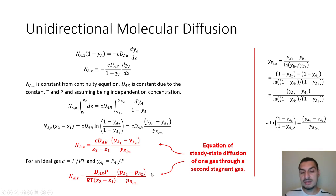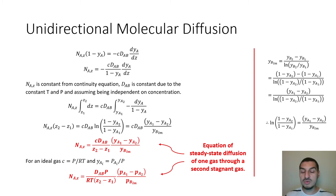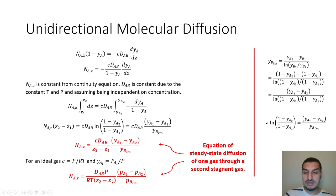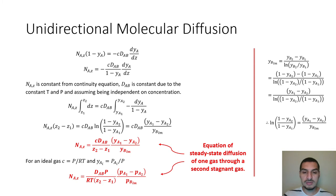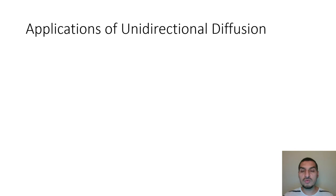These two equations are called the equations of steady state diffusion of one gas through a second stagnant gas. The flux expression uses the boundary conditions at z₁ and z₂ to give a constant value. All terms — D, P, RT, z₂−z₁, P₁, P₂, P_B,lm — are constants, so we can calculate the flux with knowledge of these parameters. I'm highlighting this because we will revisit the equation with different boundary conditions shortly.